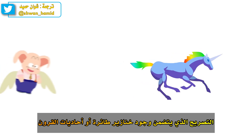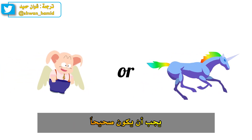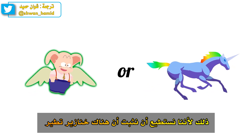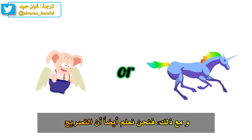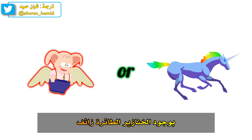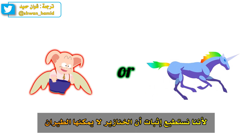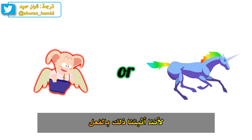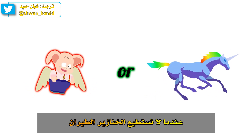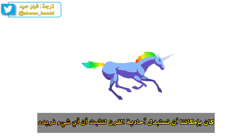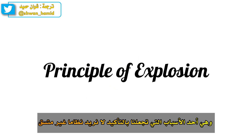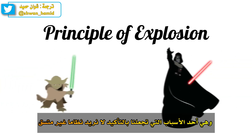The statement 'there are flying pigs, or unicorns exist' must be true, because we can prove that there are flying pigs, making the full OR claim true. However, we also know the statement 'there are flying pigs' is false, because we can prove that pigs can't fly. The full claim must still be true, because we've already proved it. For the claim to still be true when pigs can't fly, it must be the case that unicorns exist. We could have replaced 'unicorns exist' to prove anything we wanted, including 'unicorns don't exist.' This is known as the principle of explosion, and is one of the reasons why we definitely do not want an inconsistent system.